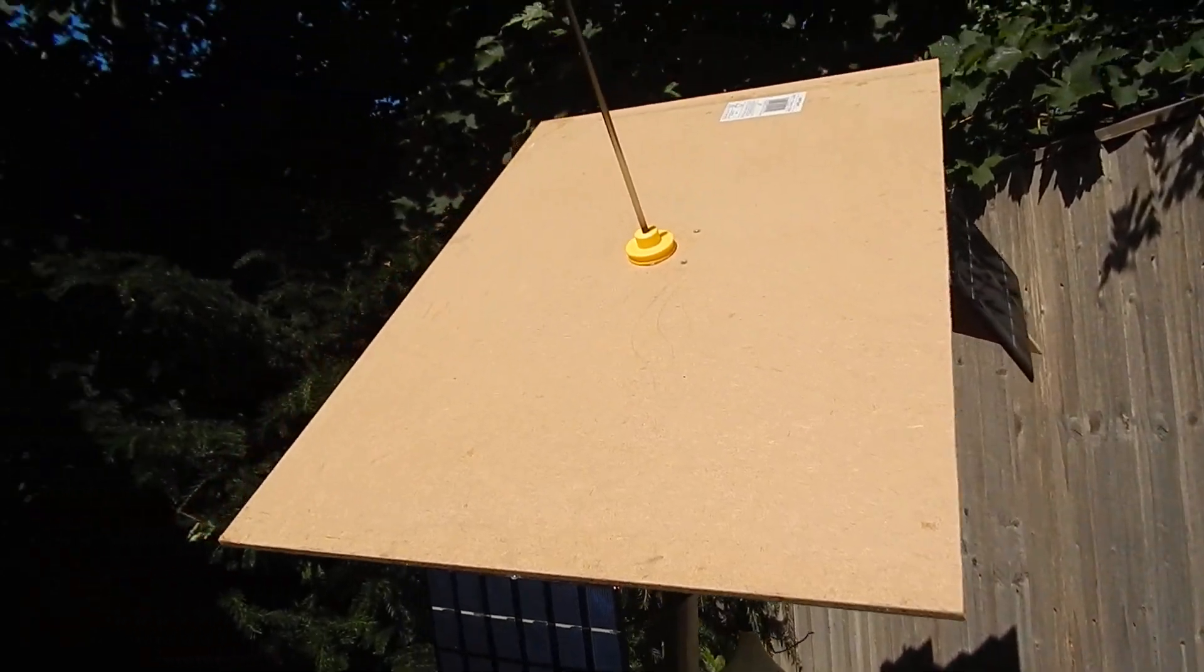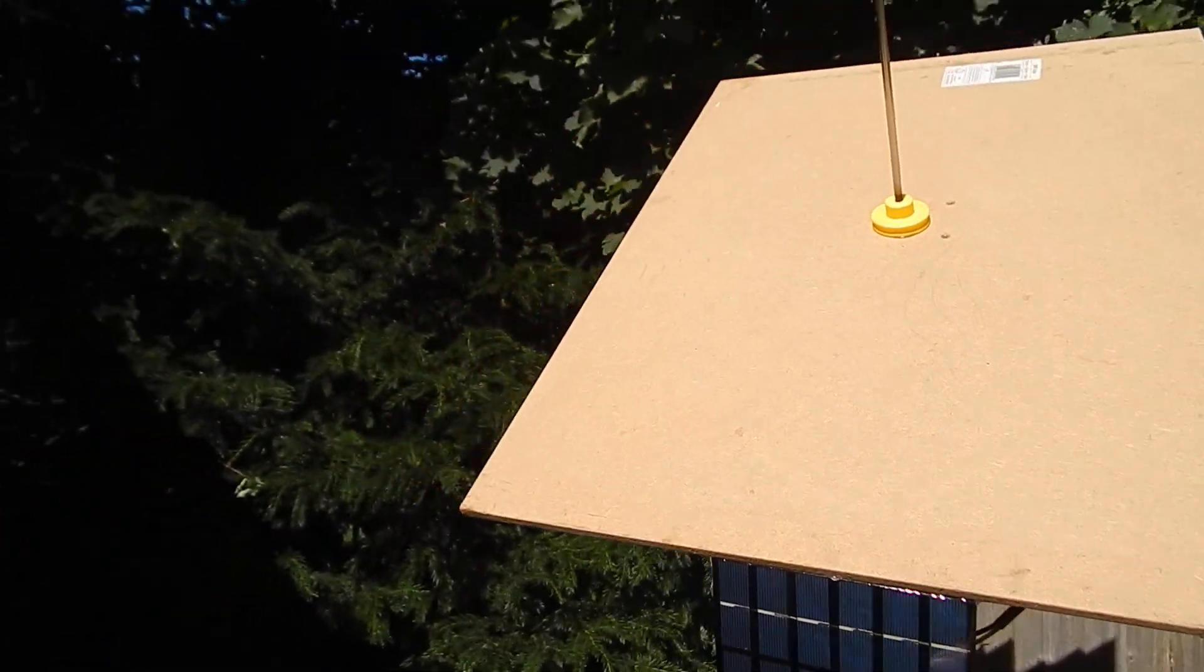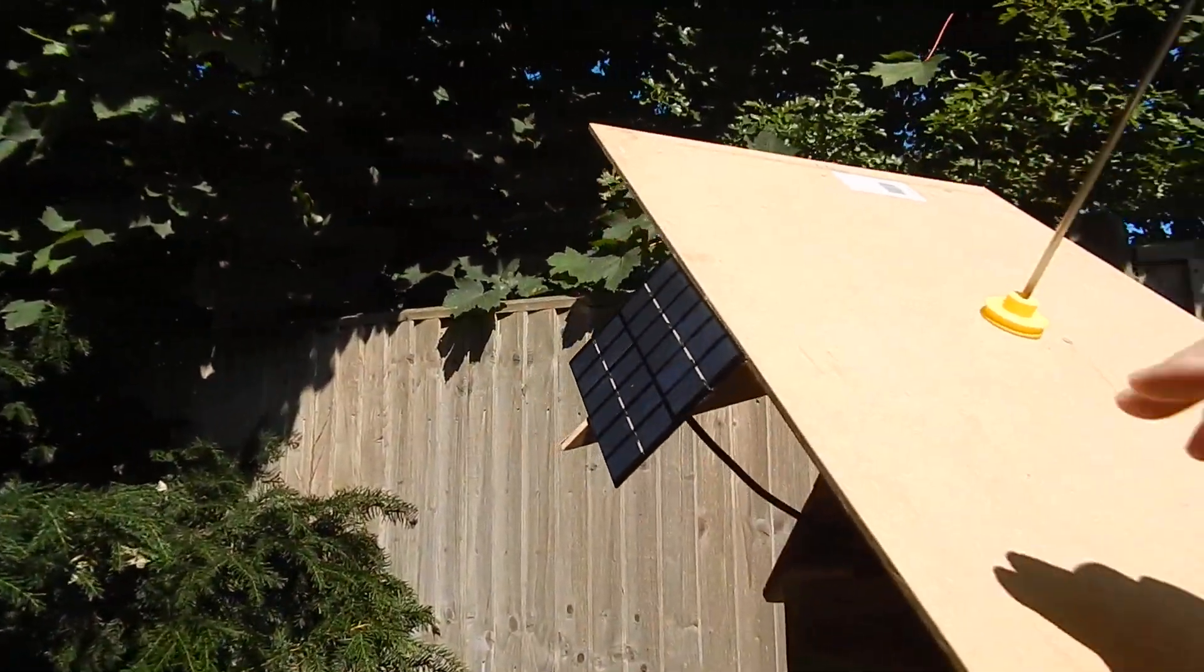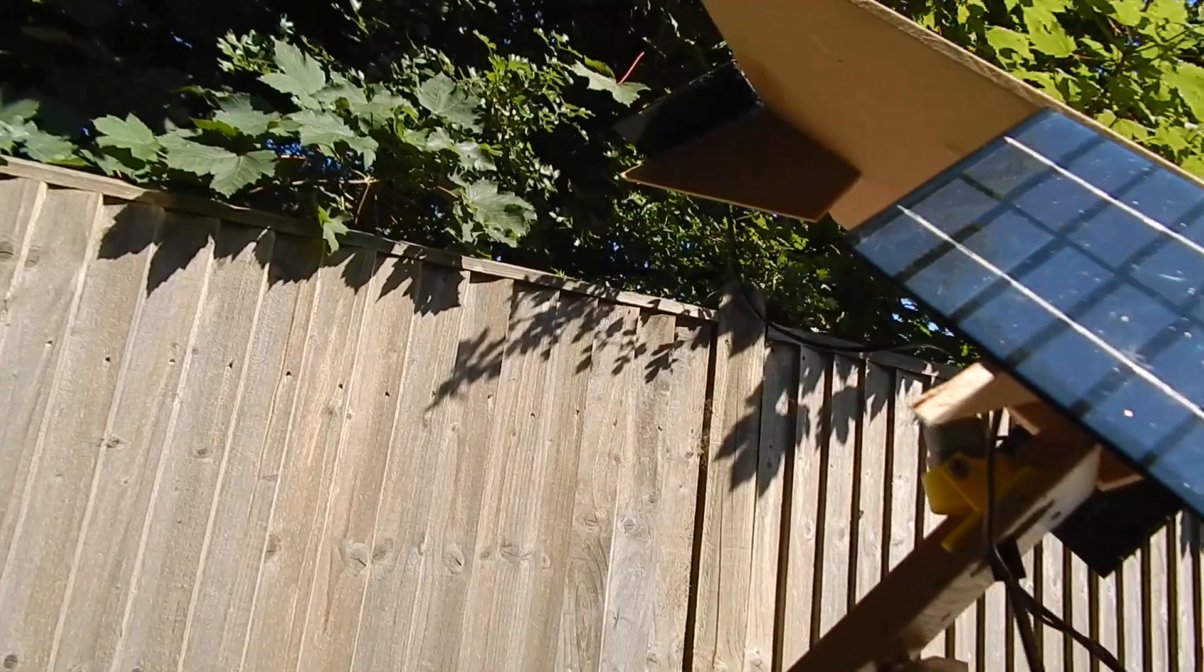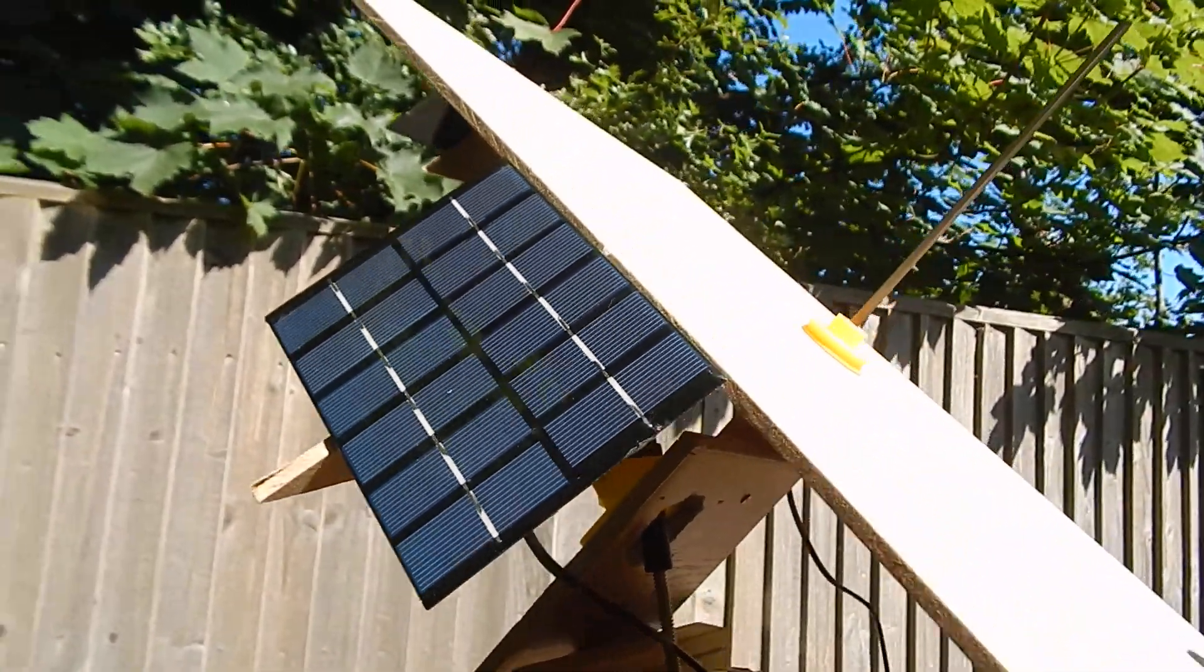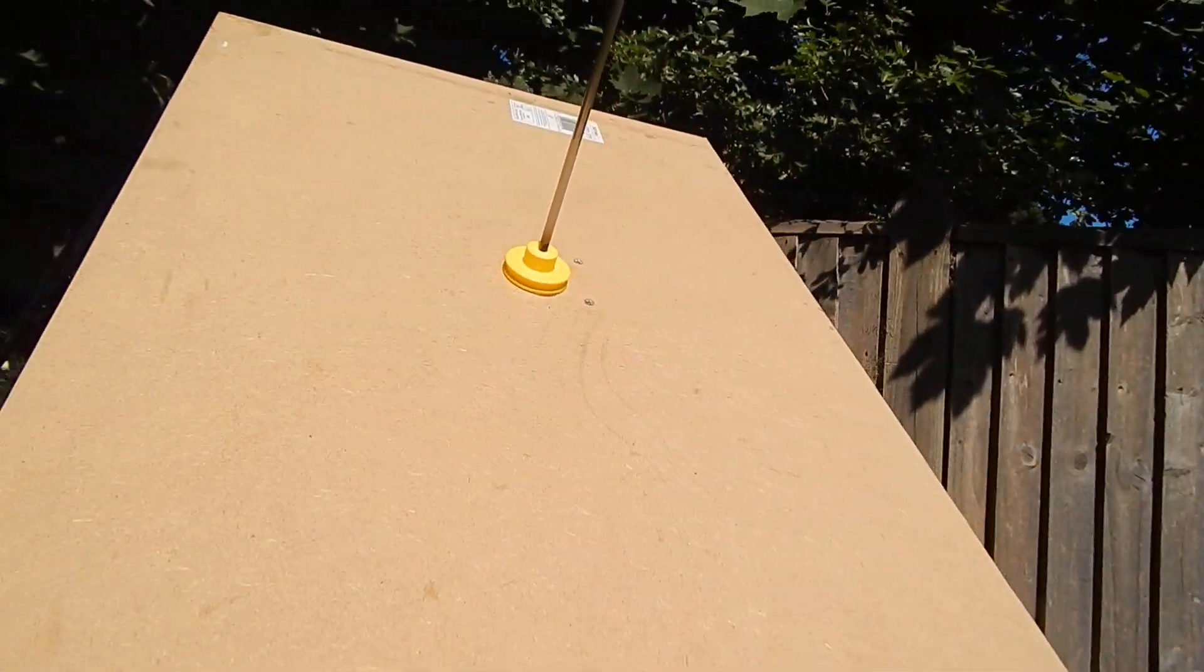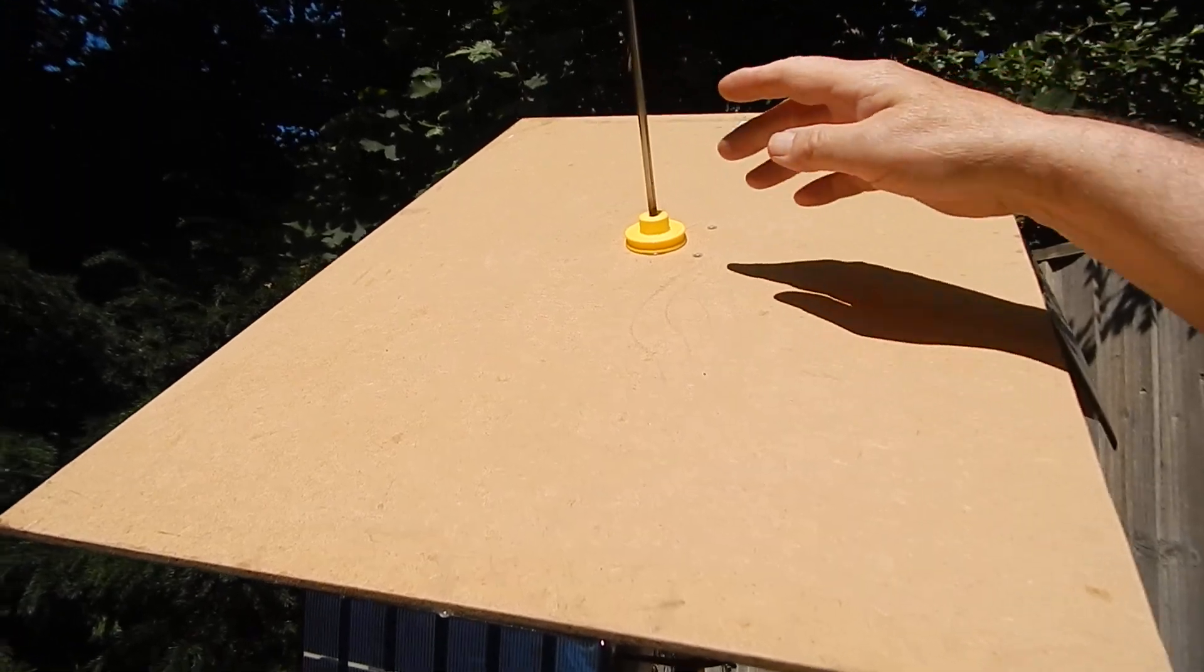Okay, so this solar tracker works on just the same principle. We've got four little solar panels here, one on each side and top to bottom. The right and left hand ones do the lateral tracking and the up and down ones do the vertical tracking.